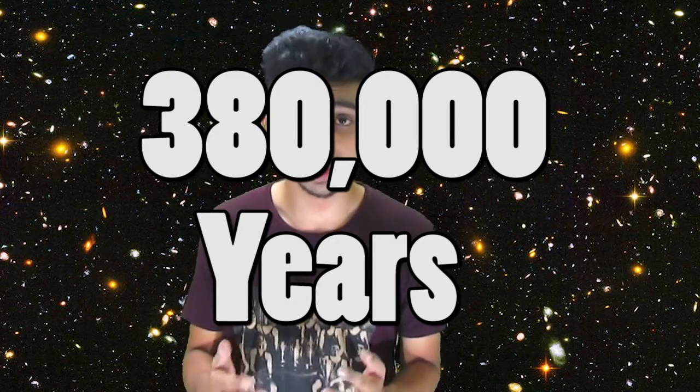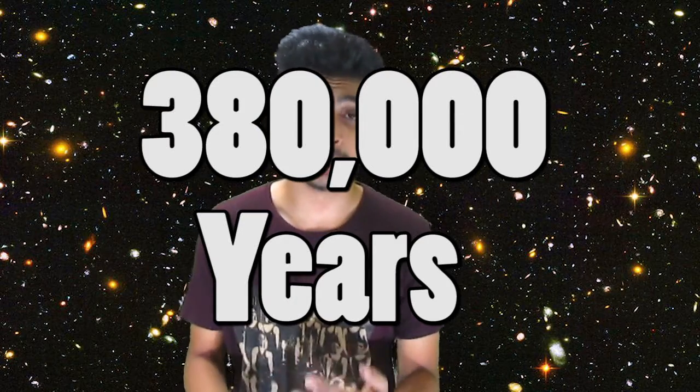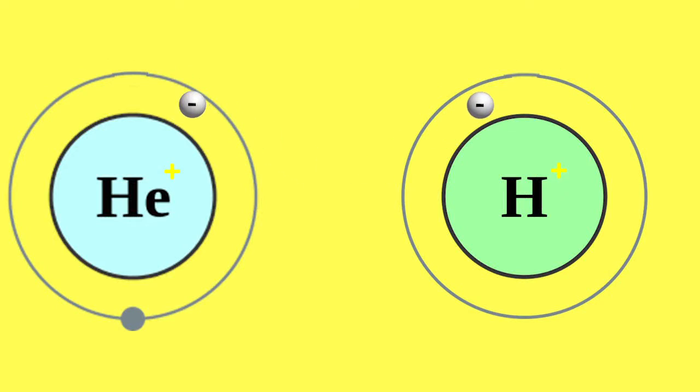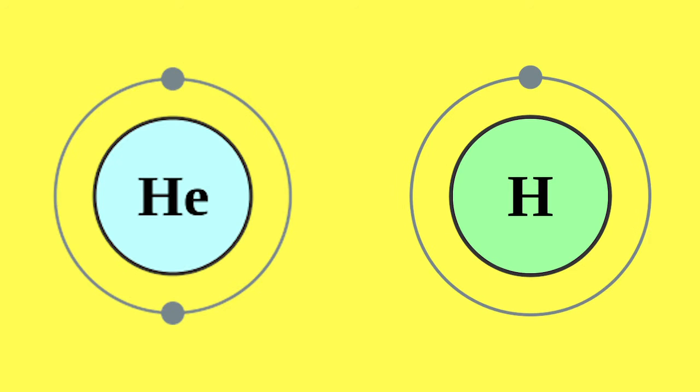The universe remained in this plasma state until around 380,000 years after the Big Bang. At this moment, the universe had cooled enough due to its expansion that the free electrons combined with the ionized hydrogen to form neutral hydrogen and other similar lighter elements. At this point, the density of electrons in the universe became low, and the mean free path of a photon became as large as the size of our universe.